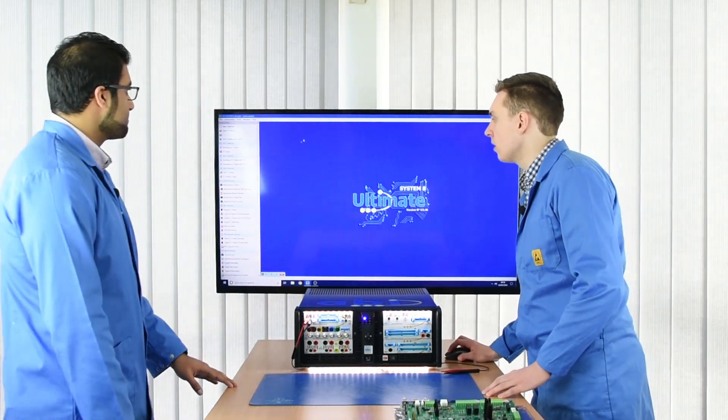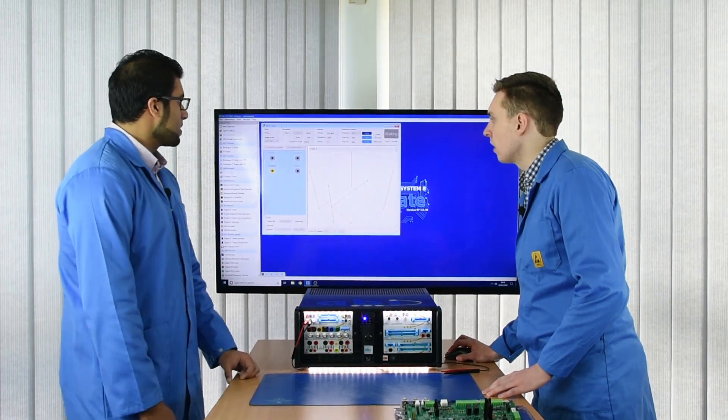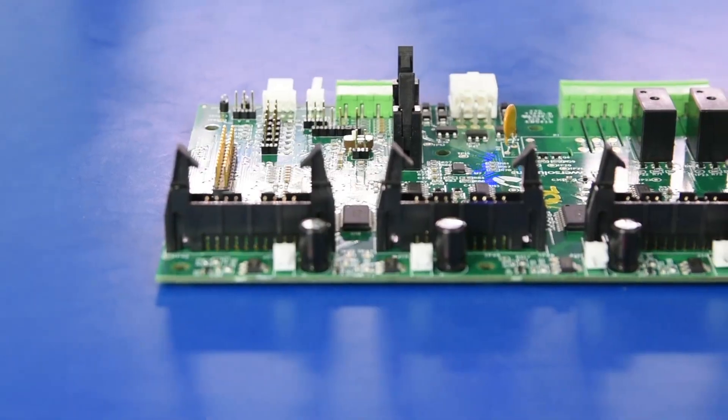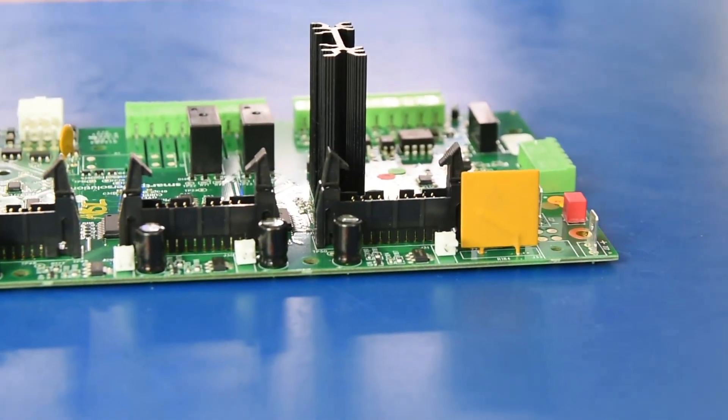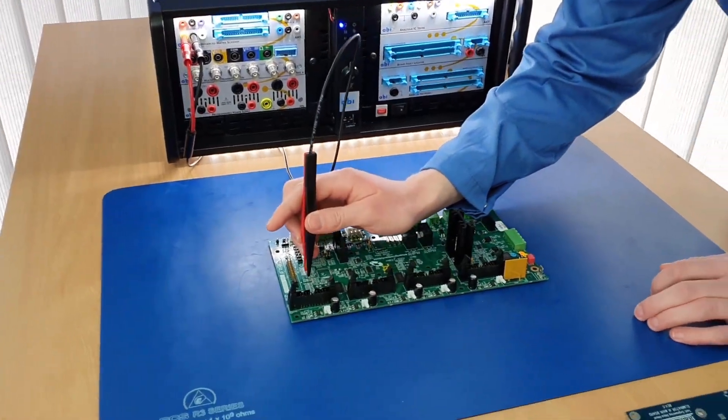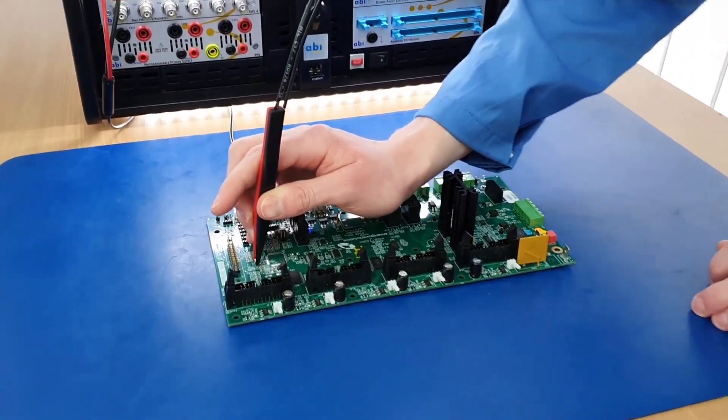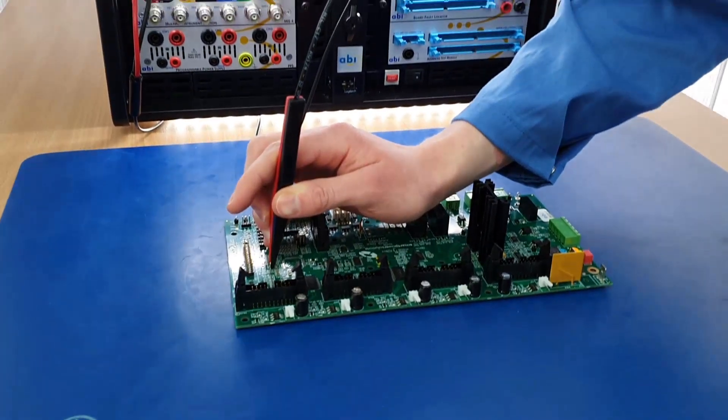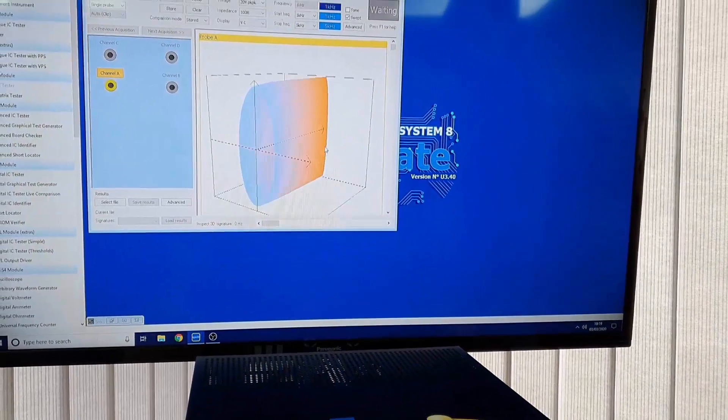Absolutely, yeah. So I'll bring up the 3DVI in the AMS module. Once again we're still on the AMS module, start testing the foot switch. We're using the tweezers in this case, starting to measure a capacitor because the resistor wouldn't show much variation in frequency. And that's our 3D model of a capacitor's VI signature.